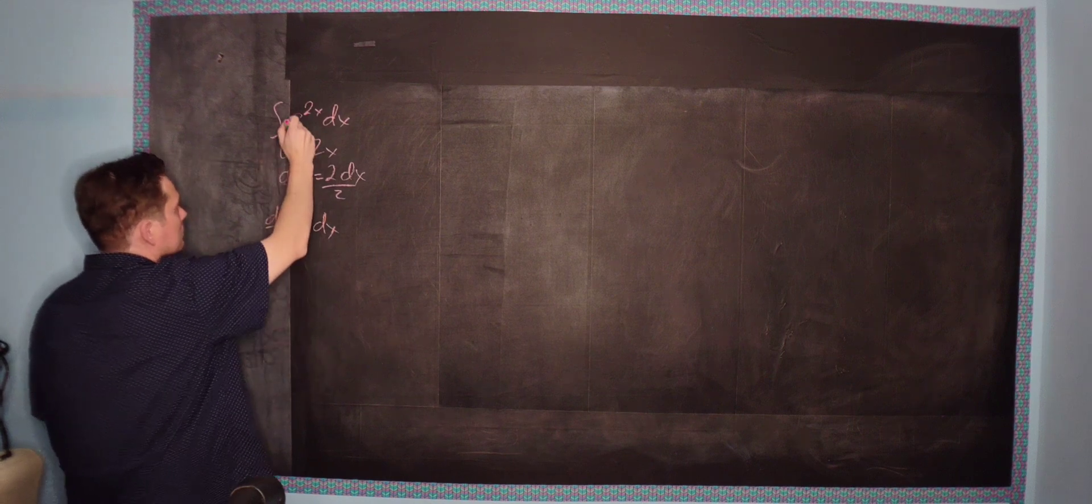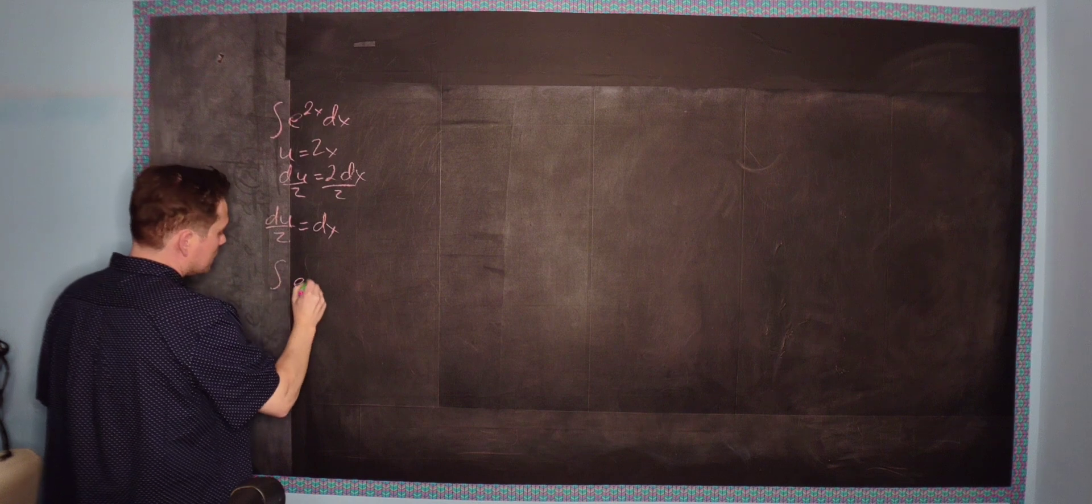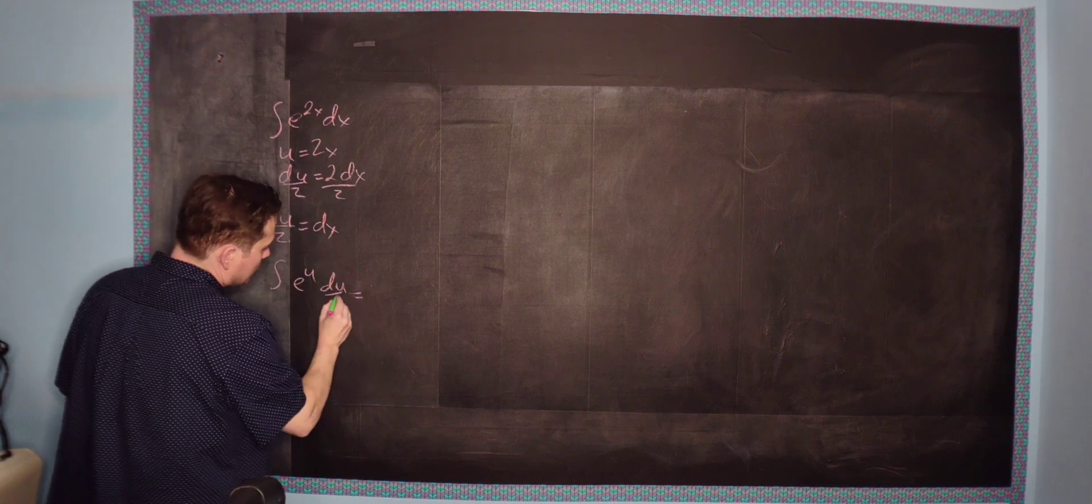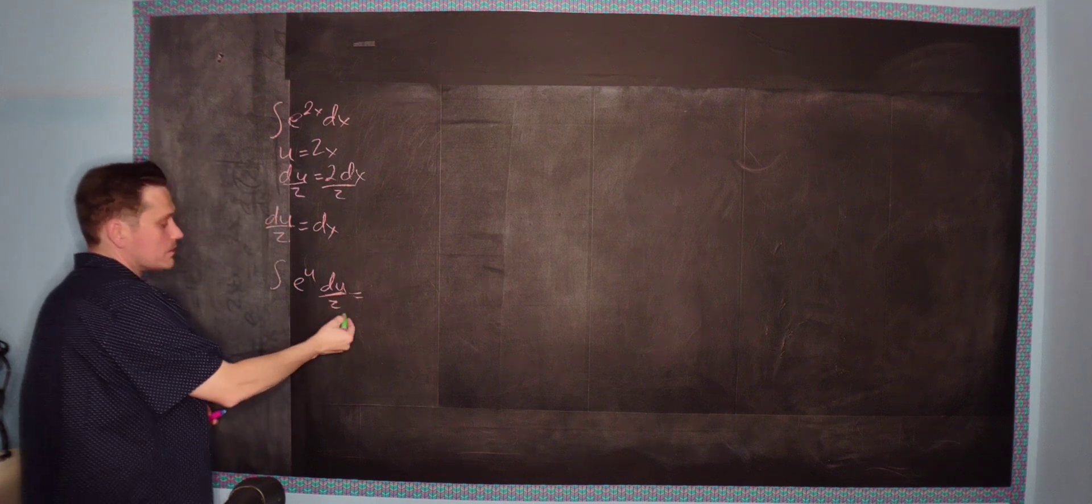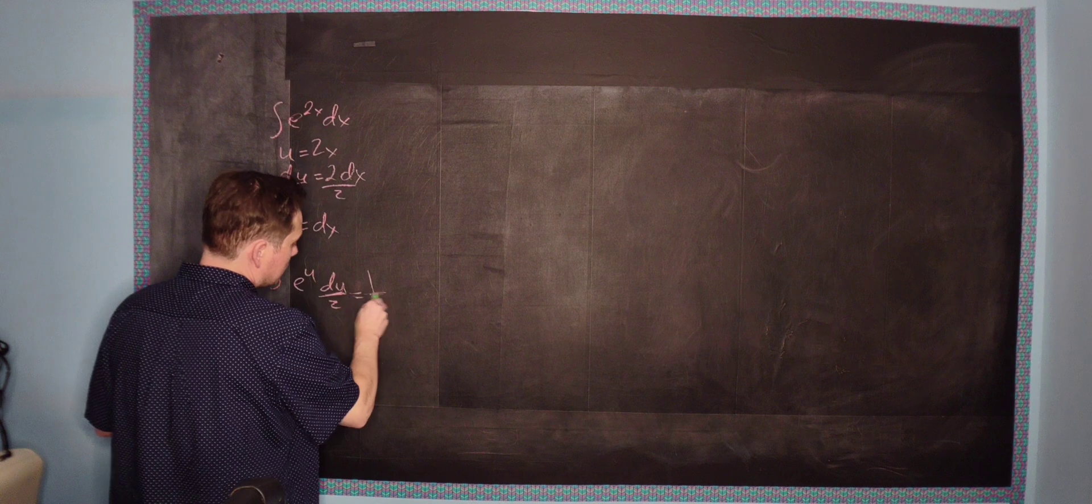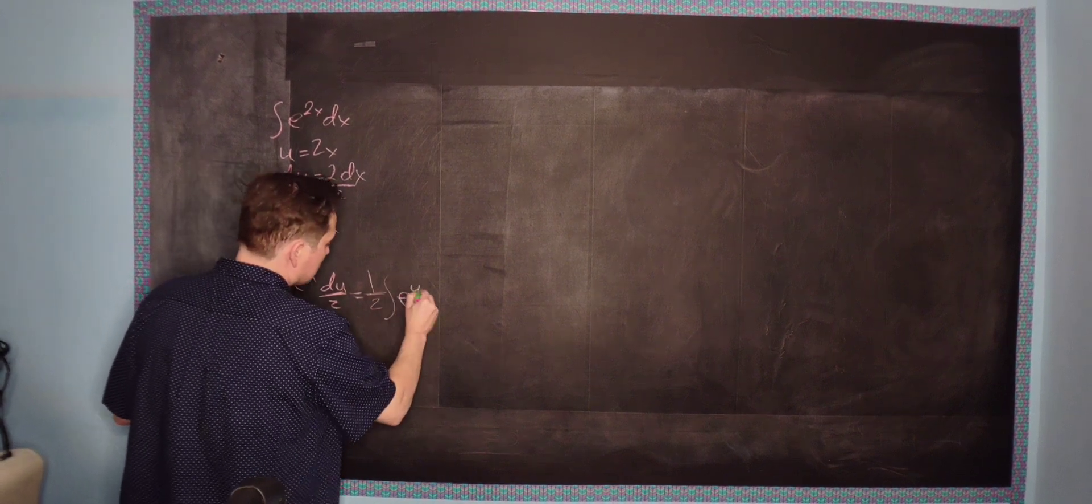So that means that du divided by 2 is equal to dx. That means our integral now can be recreated as follows. We can say it's the integral of e to the u, and then du over 2. Now, we are dividing by 2 here, so we can factor that out as 1 half. And then you have left here the integral of e to the u du.